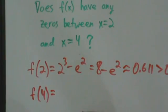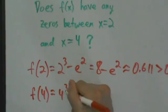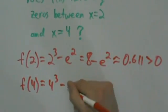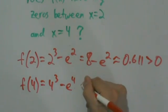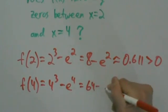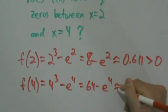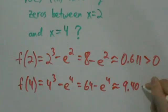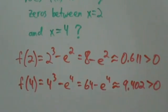Now we look at f(4). f(4) equals 4 cubed minus e to the 4, and that's going to be 64 minus e to the fourth power, which when we toss into a calculator is about equal to 9.402, which is also positive. So that's no good.